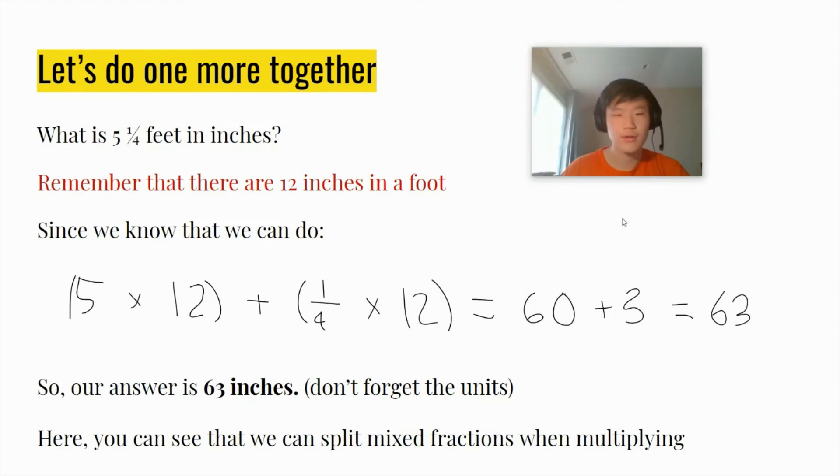Let's do one more. What is 5 and 1/4 feet in inches? Remember there are 12 inches in a foot. This is important for this question. Since we know that, we can do 5 × 12 + 1/4 × 12, which gets us 60 + 3, which is 63. So our answer is 63 inches. Don't forget the units. Here you can see that we can split the mixed fractions when multiplying.